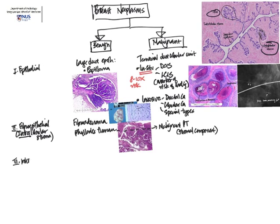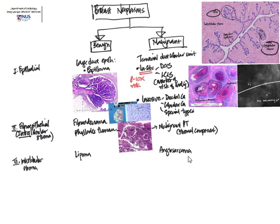Moving on, the next main category is the interlobular stroma, where we can see fatty tissue, fibrous tissue, and blood vessels. An example of a benign neoplasm is a lipoma, and an example of a malignant tumor is angiosarcoma — a malignant tumor of blood vessels. This can sometimes be secondary to radiation; if a patient is treated with radiation to the chest area for another malignancy, they can develop a secondary angiosarcoma.